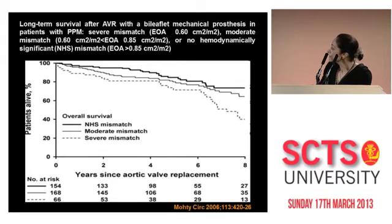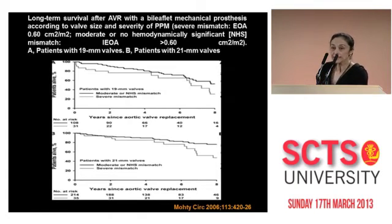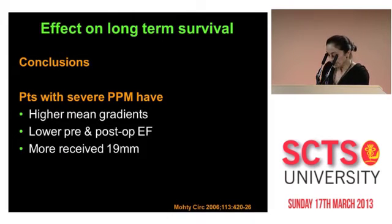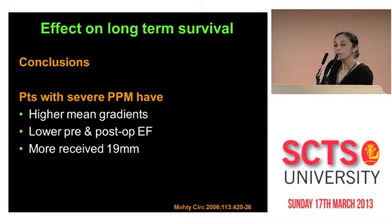Patients with severe mismatch did worse in terms of survival — it's the dotted graph — and those with moderate mismatch did a bit better. They also looked at sub-cohorts with a 19 millimeter valve and a 21 millimeter valve. In both sub-populations, patients with severe mismatch did worse. In summary, from these studies, patients with severe mismatch tend to have high mean gradients prior to operation and a lower pre- and post-operative ejection fraction.